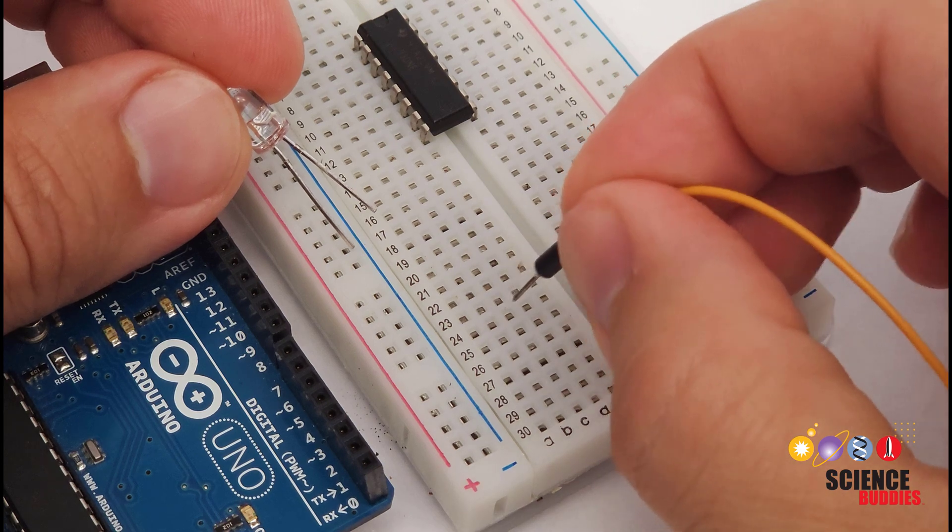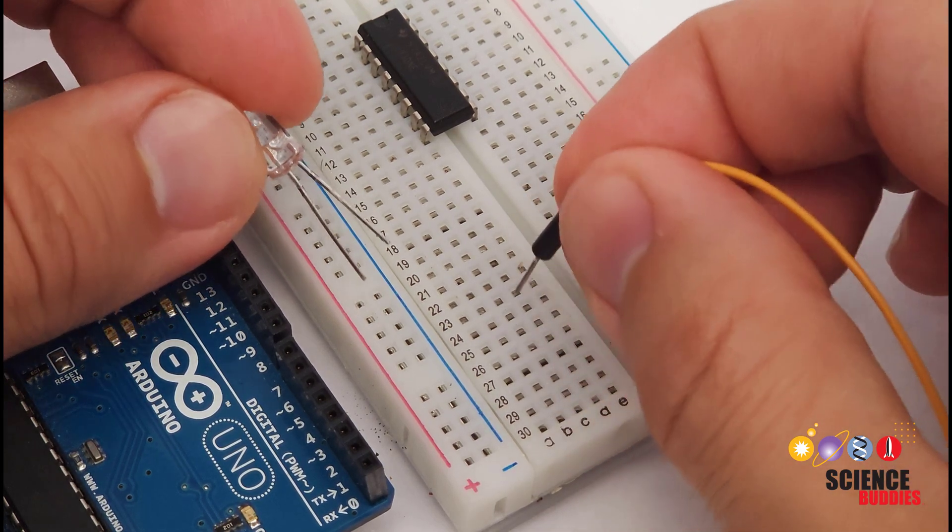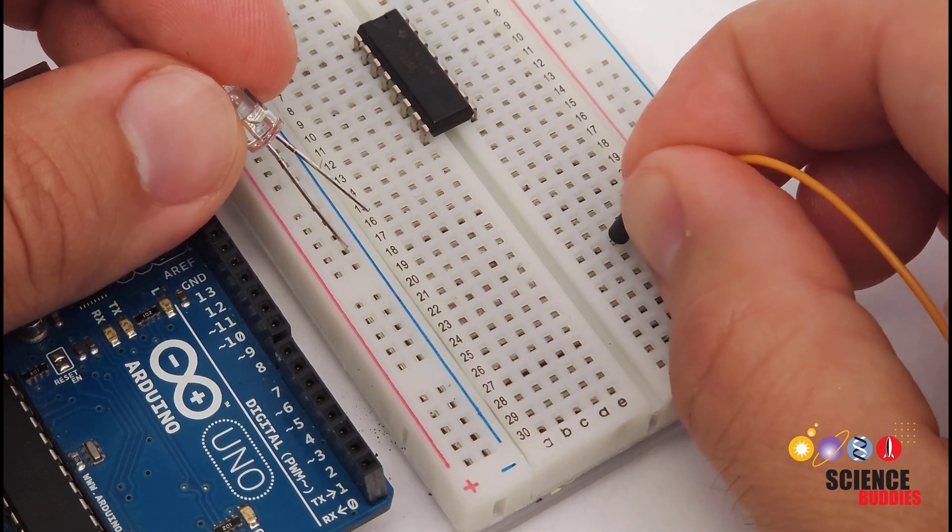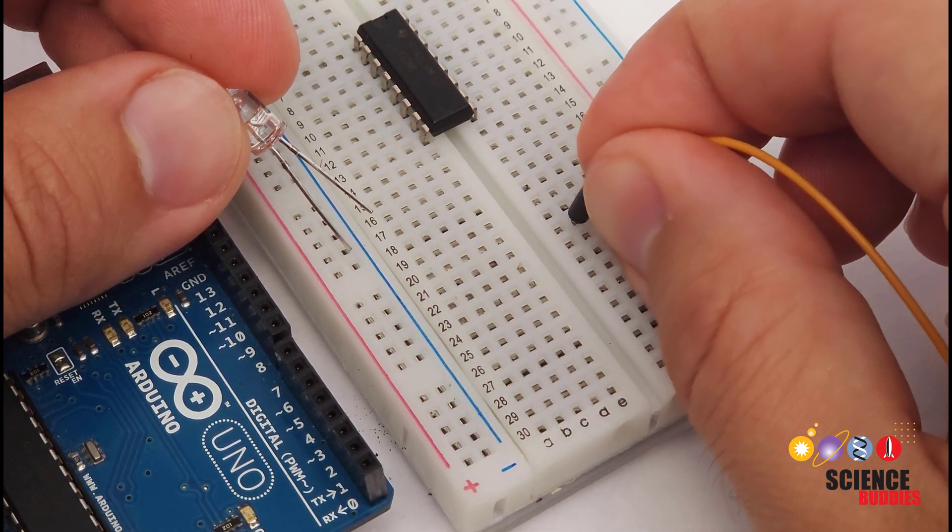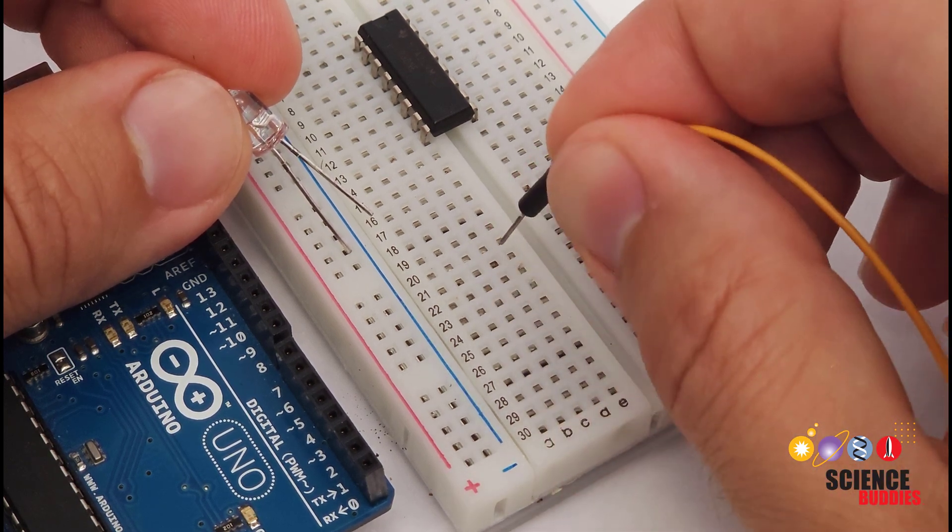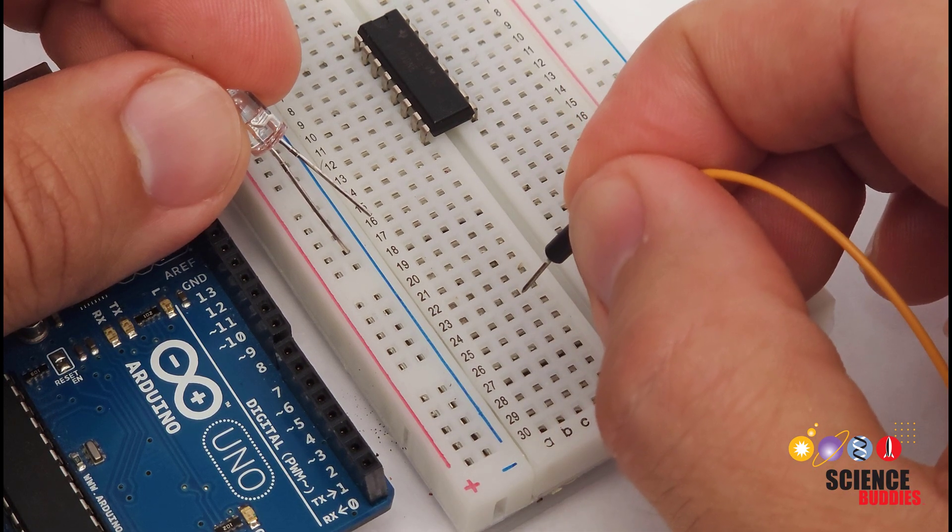A breadboard consists of a grid of holes that you can push parts like jumper wires and LEDs into when building a circuit. It's called a solderless breadboard because these connections are temporary and do not require any soldering. You can easily remove the parts and move them around when you want to build something different.